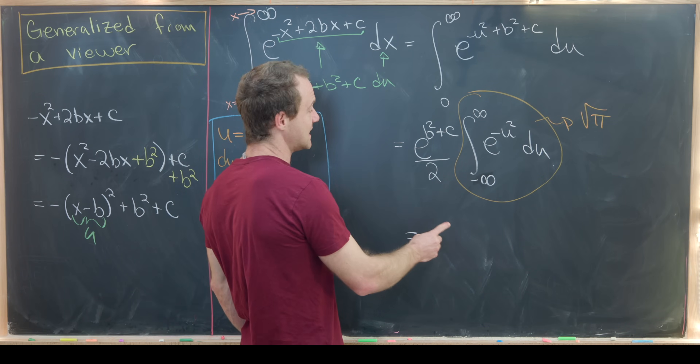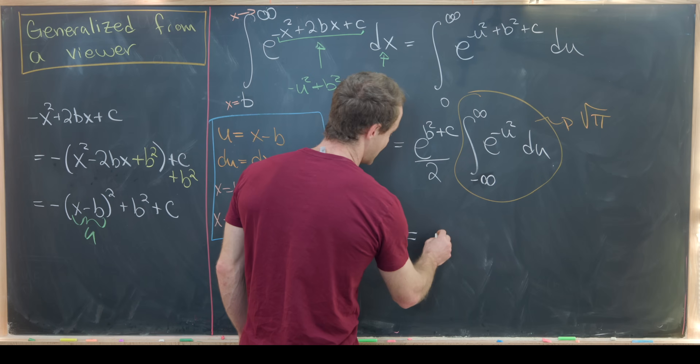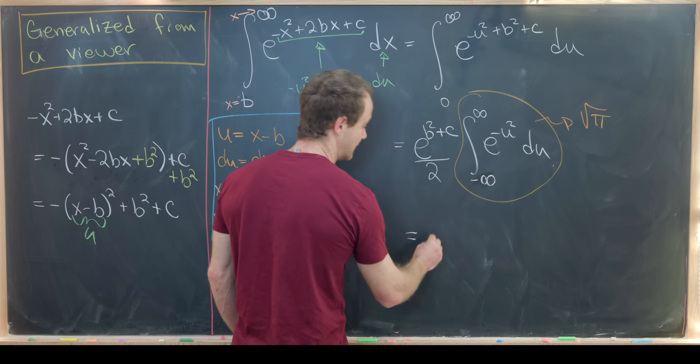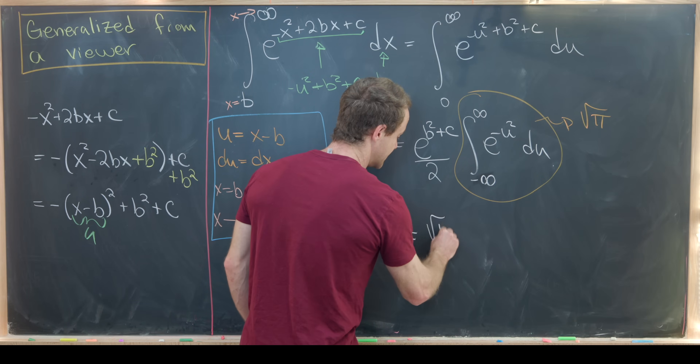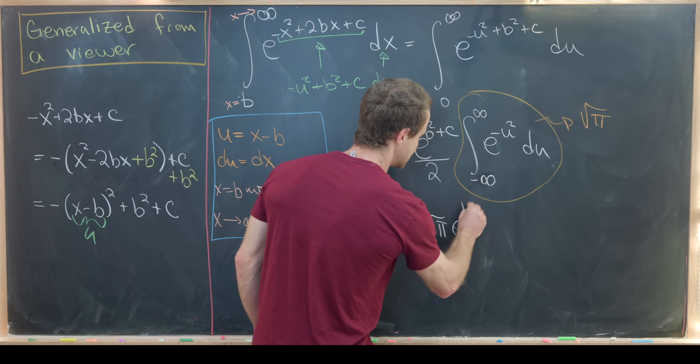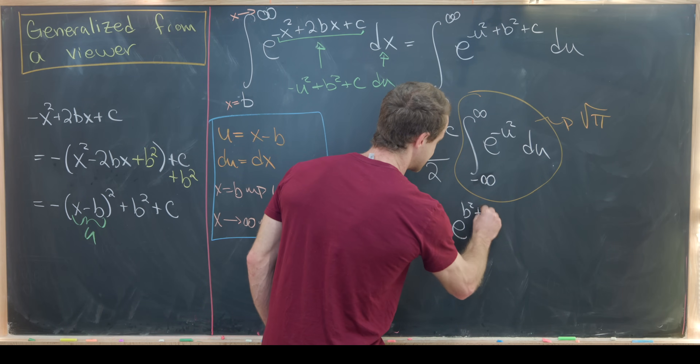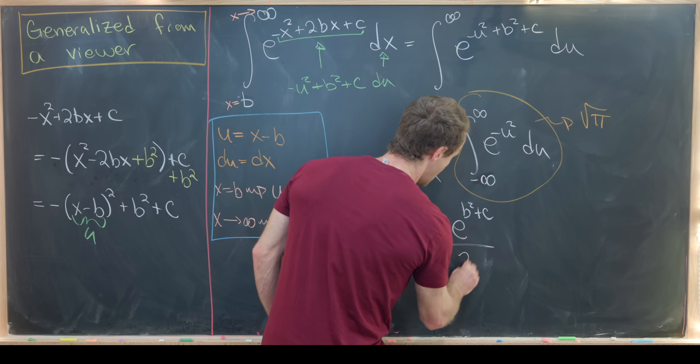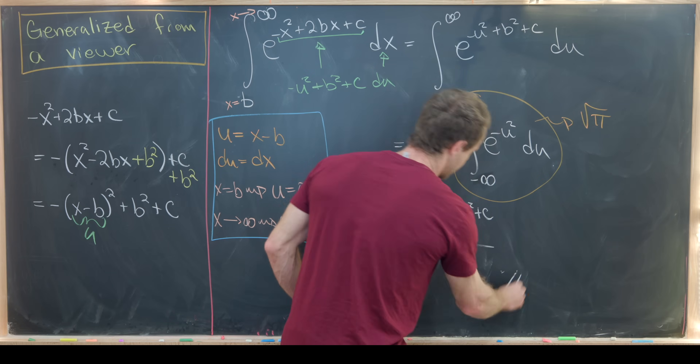So in the end, our final value will be the square root of pi times e to the b squared plus c, all over two.